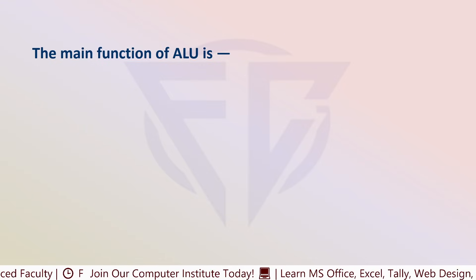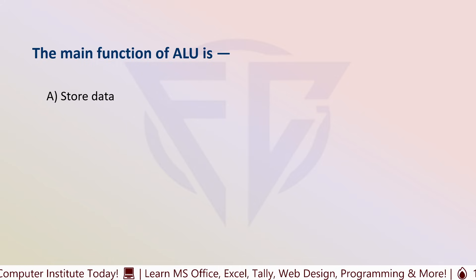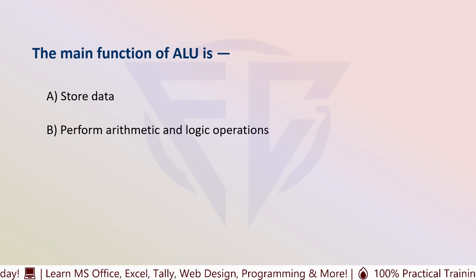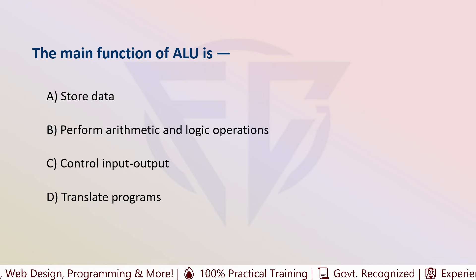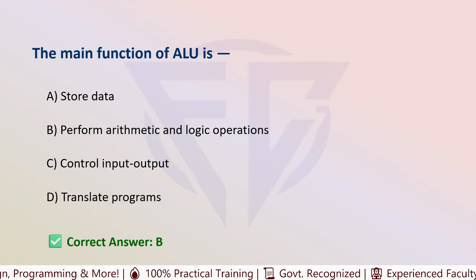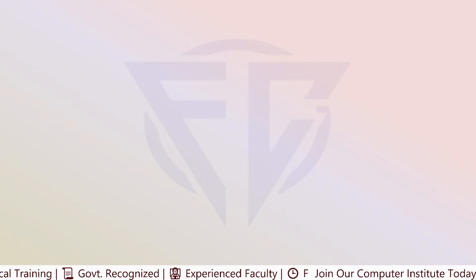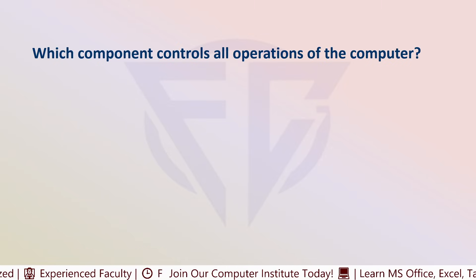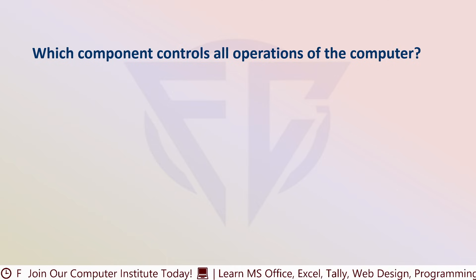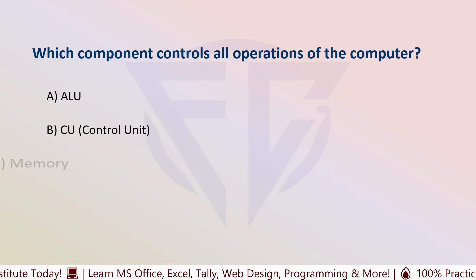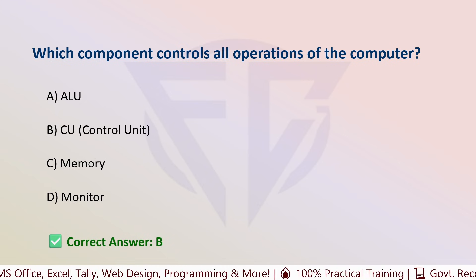The next question is: the main function of ALU is — options are: A) Store data, B) Perform arithmetic and logic operations, C) Control input or output, and D) Translate programs. The correct answer is B, perform arithmetic and logic operations. The next question: which component controls all operations of the computer? Options are: A) ALU, B) CU, C) Memory, and D) Monitor. The correct answer is B, that is CU.